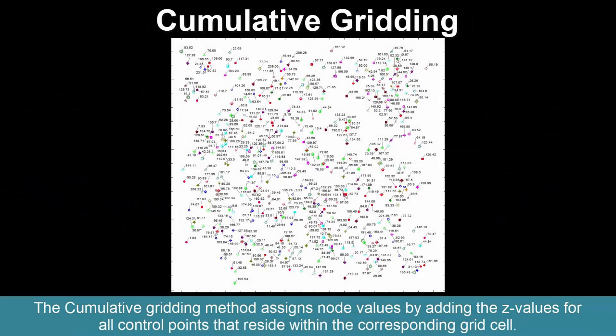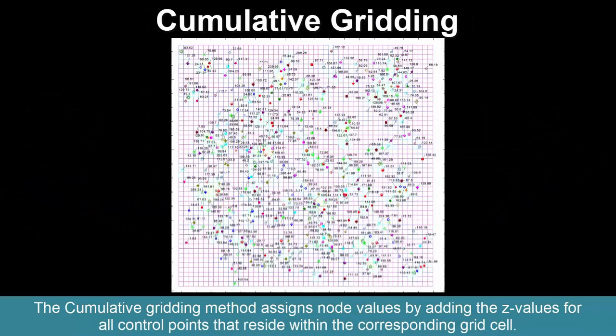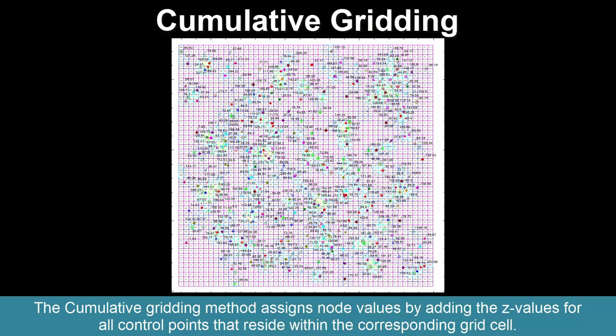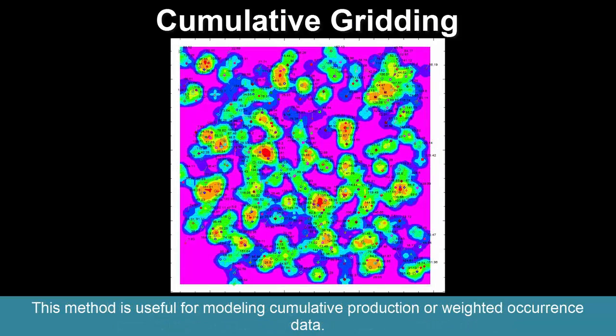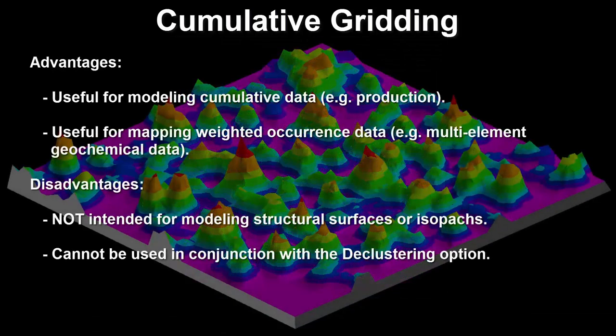The cumulative gridding method assigns node values by adding the z values for all control points that reside within the corresponding grid cell. This method is useful for modeling cumulative production or weighted occurrence data. Advantages: useful for modeling cumulative data such as production, and for mapping weighted occurrence data such as multi-element geochemical data. Disadvantages: it's not intended for modeling structural surfaces or isopacks, and it cannot be used with the declustering option.